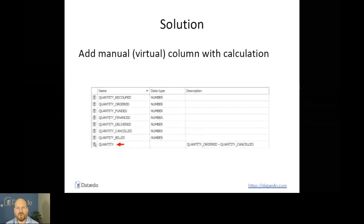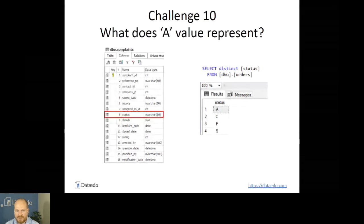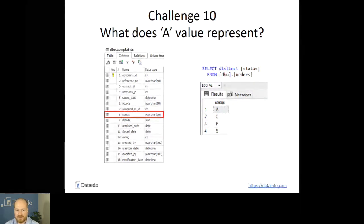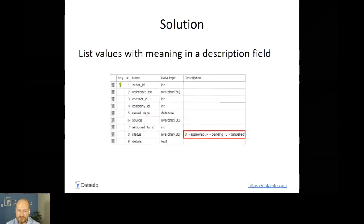Challenge number ten: what does a specific value in a column represent? Let's take a very common example of a status field. You query the table and there are just single letters — you could guess that 'A' is approved, but you don't always have a place to check that out. Simple solution: list all the values in the documentation and provide labels and explanations for those values. That saves a lot of work and prevents bugs in the reports.